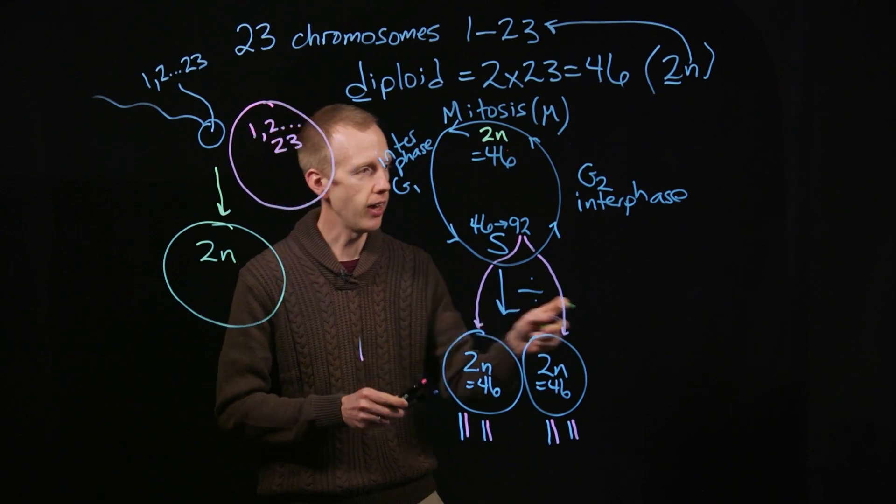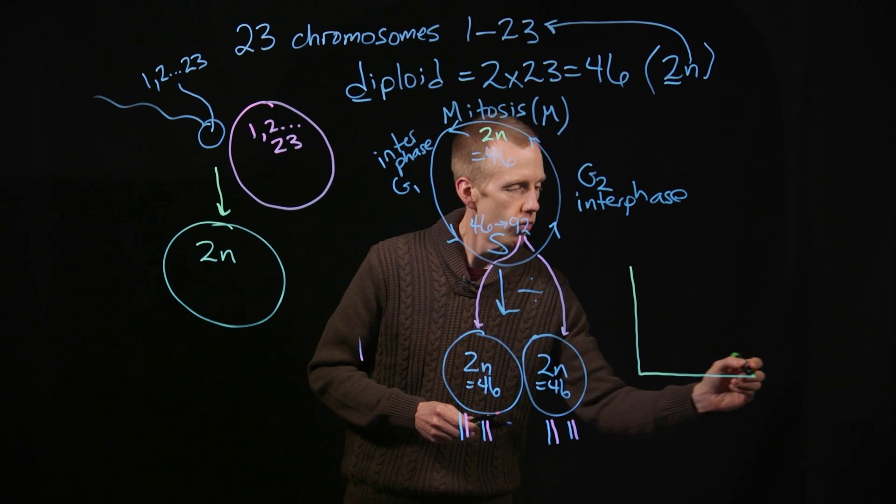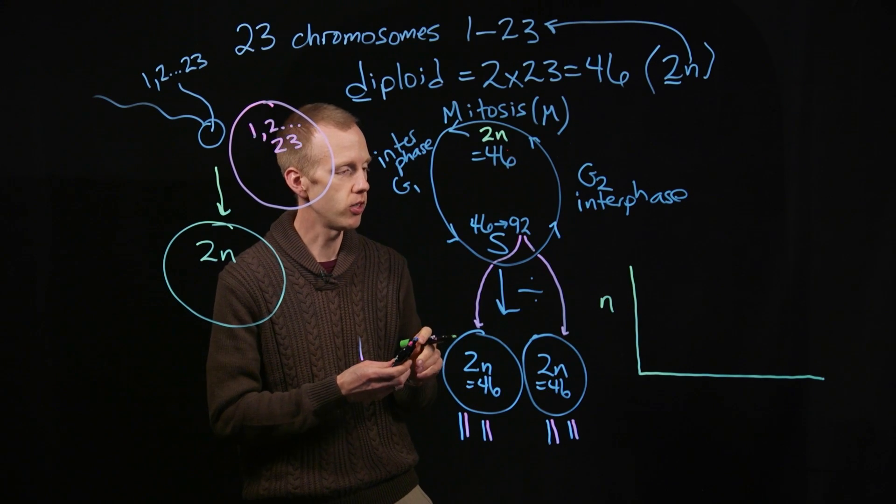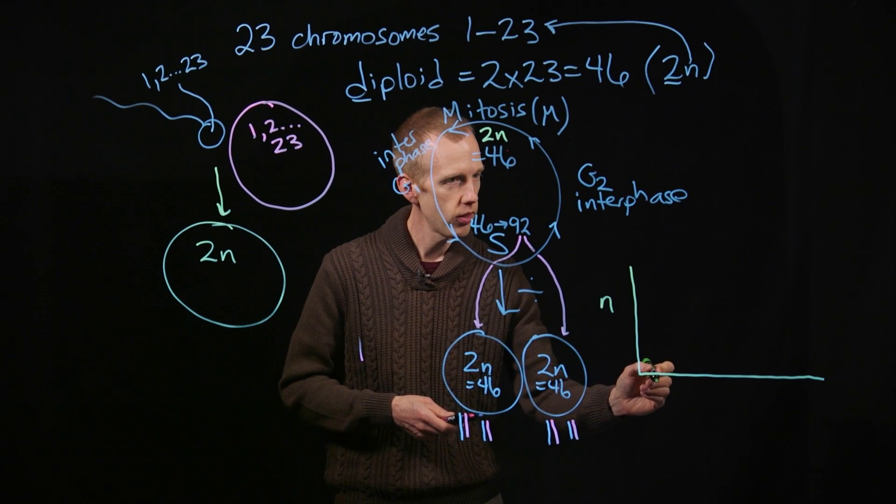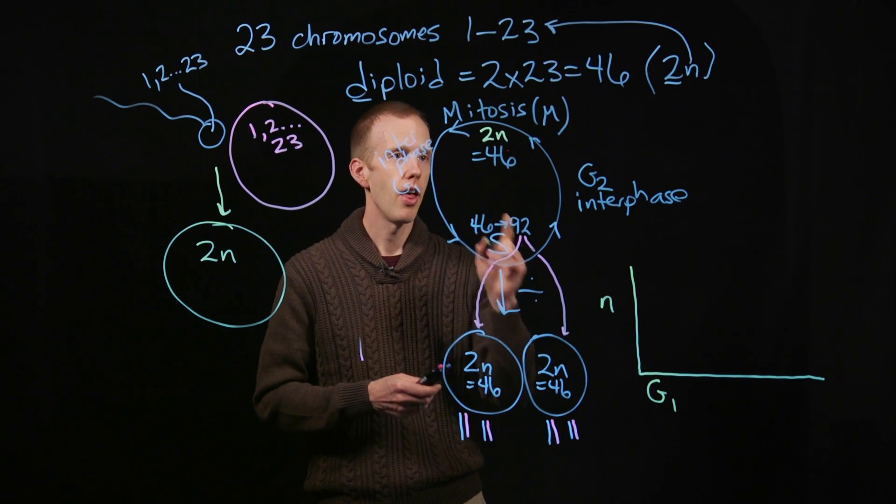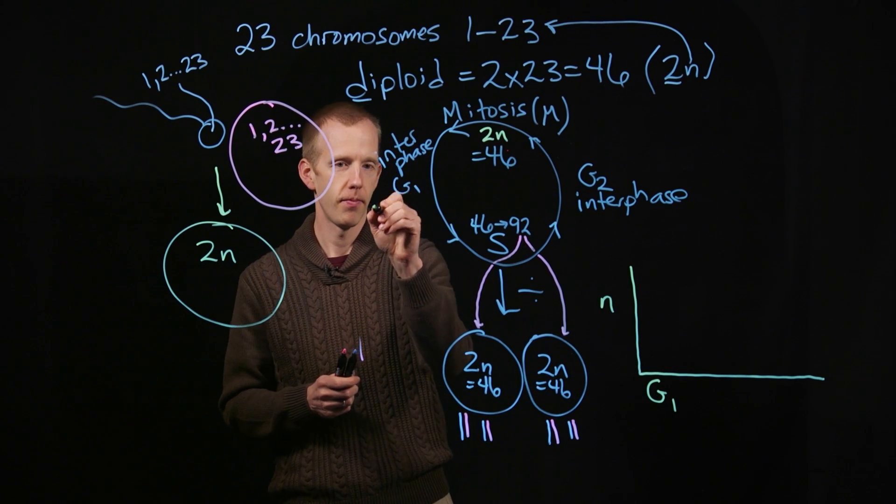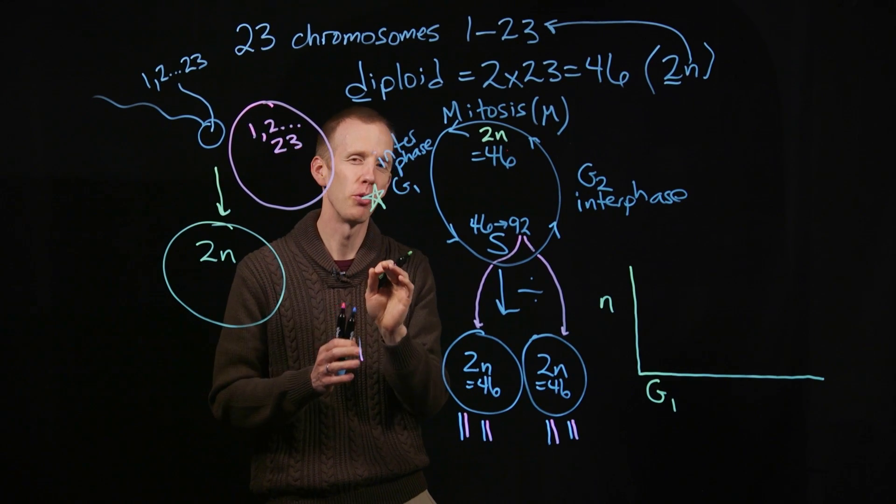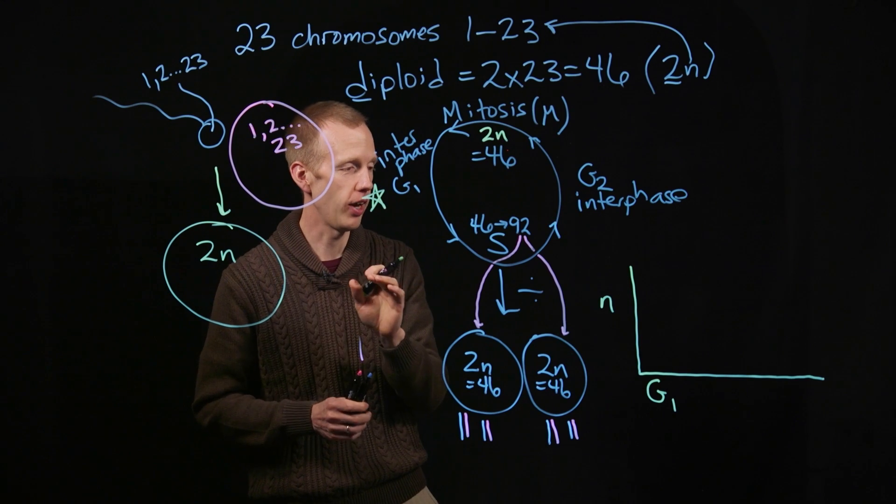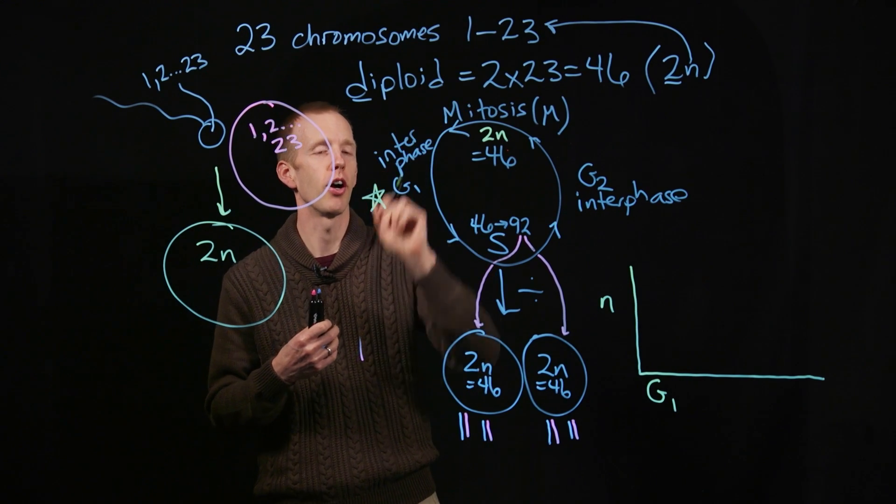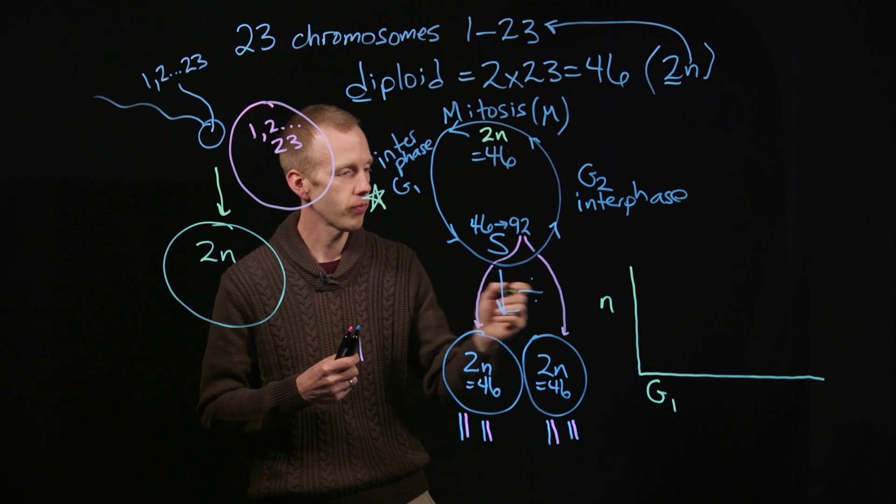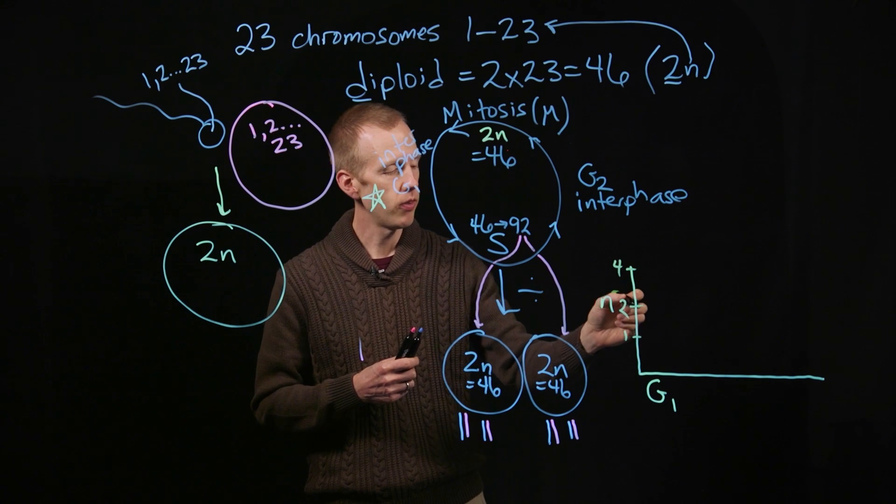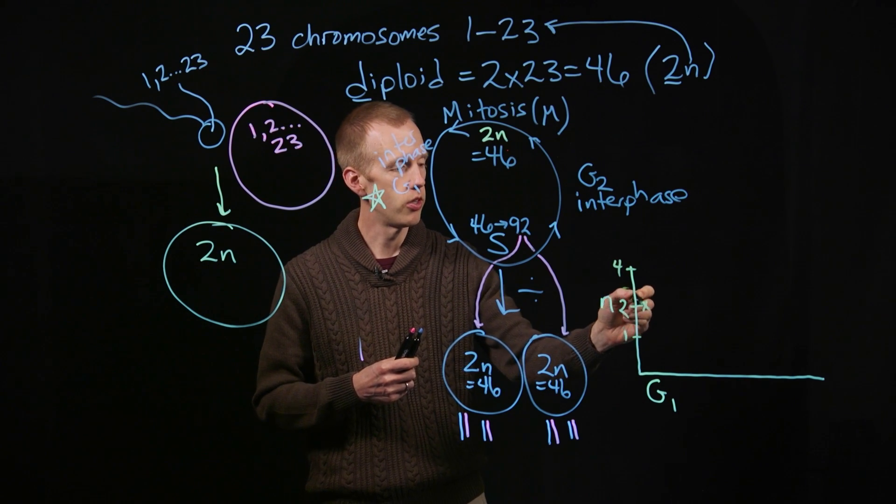So finally, if we were going to plot, over the cell cycle, the amount of DNA, N, numbers of copies of each of the chromosomes, we could start with G1, interphase. This is where ploidy is determined. This is when geneticists define how many chromosomes every cell is going to have. That's how we know, for example, that humans are diploid organisms. We start with two copies of every chromosome in the G1 phase.